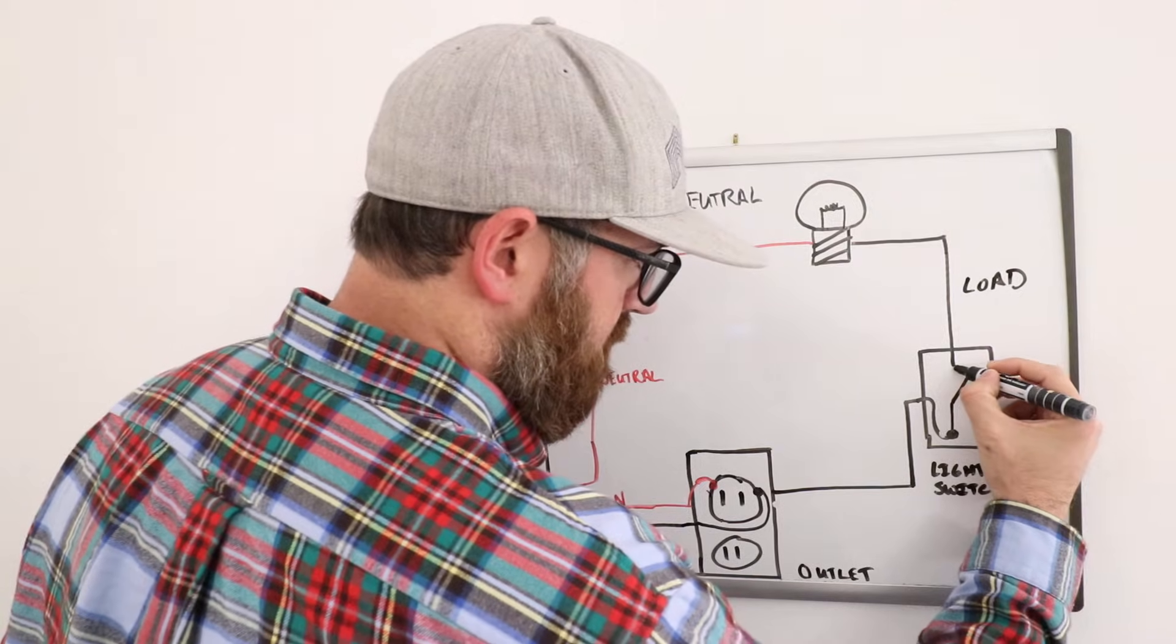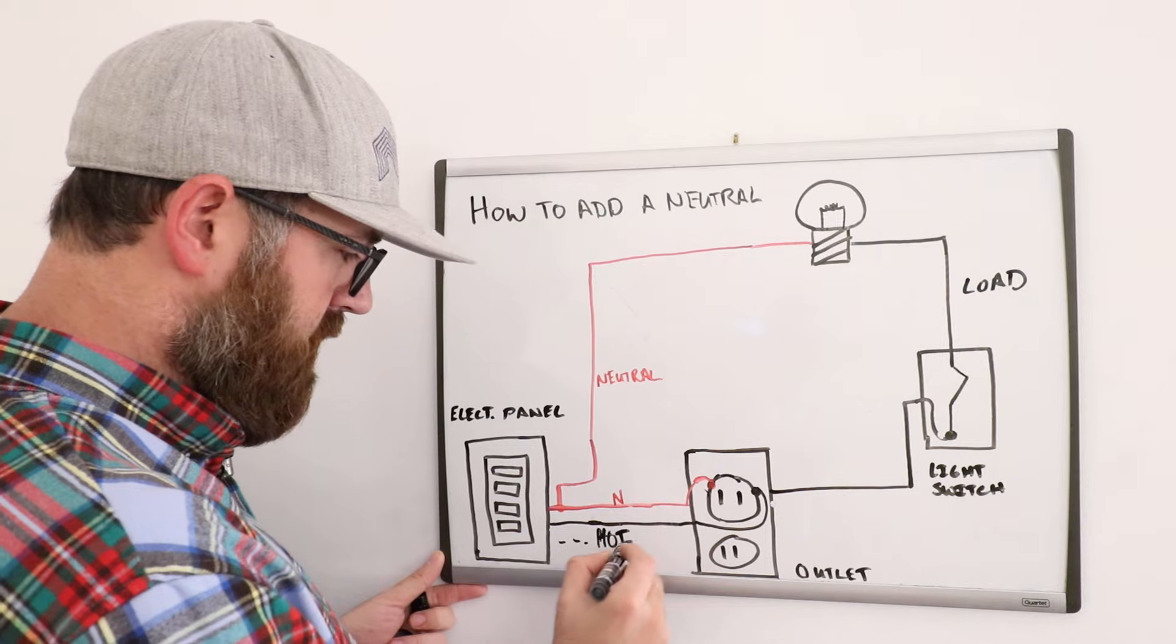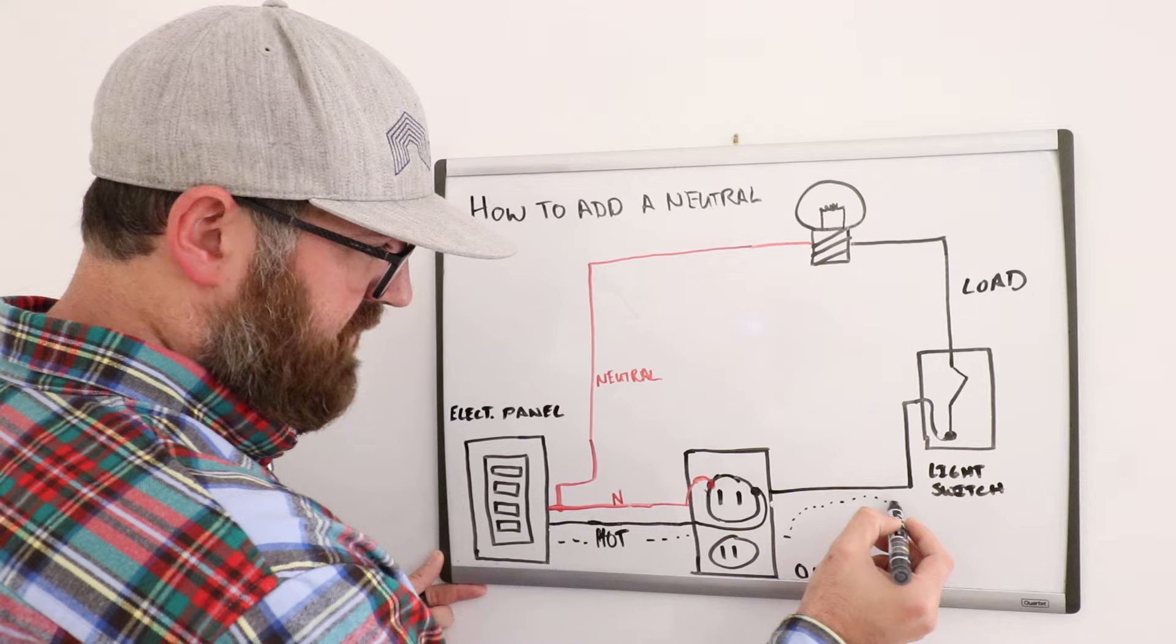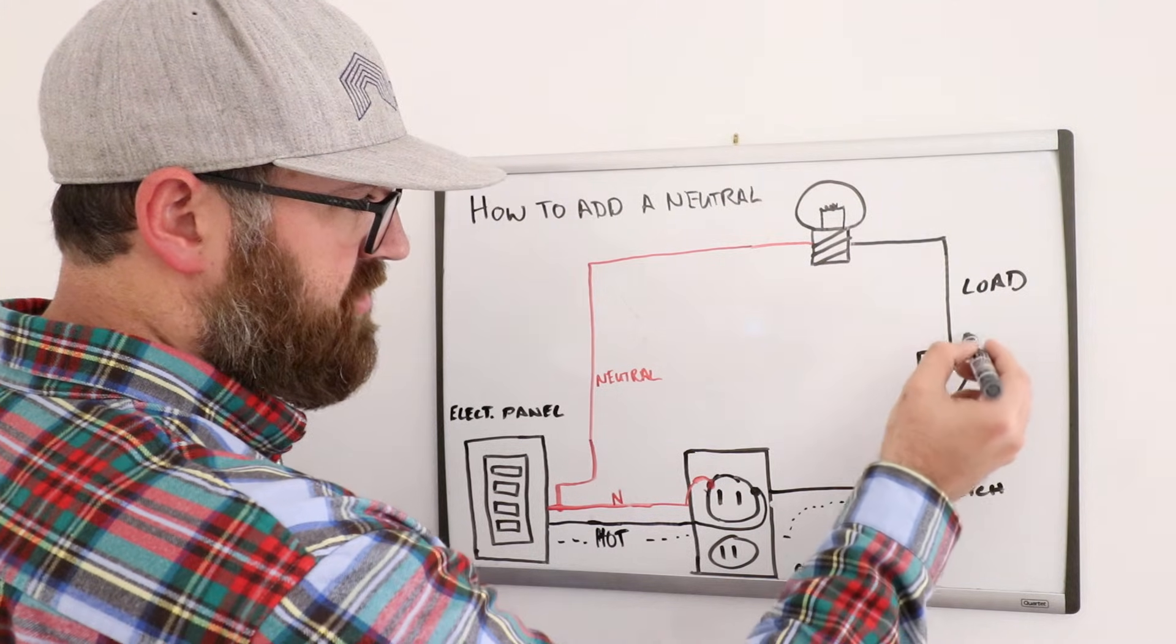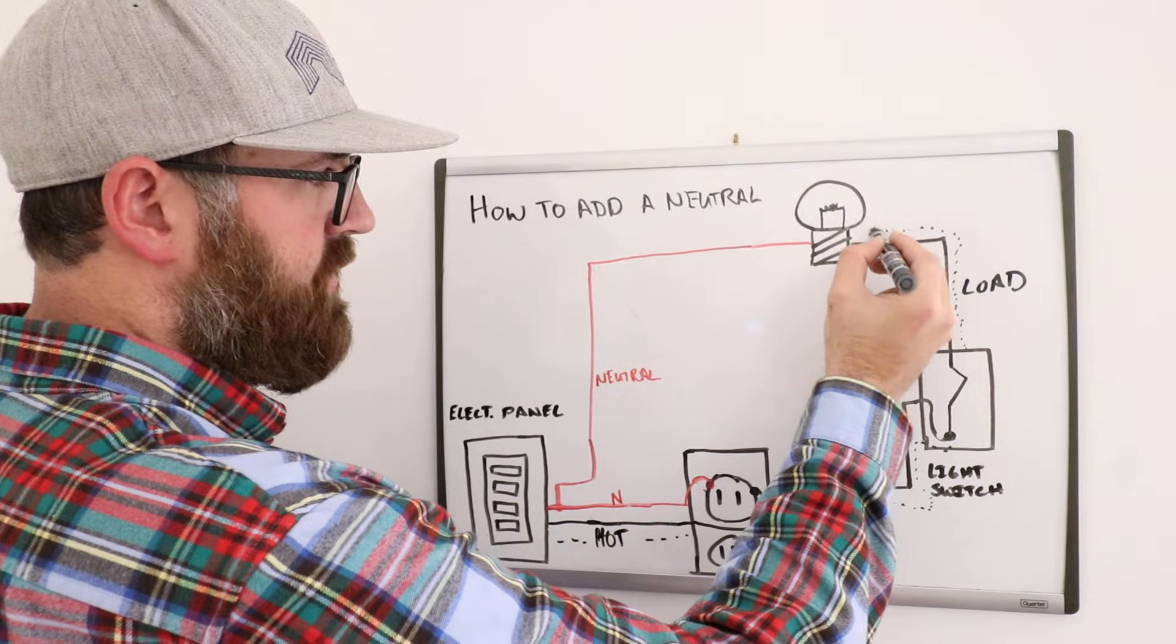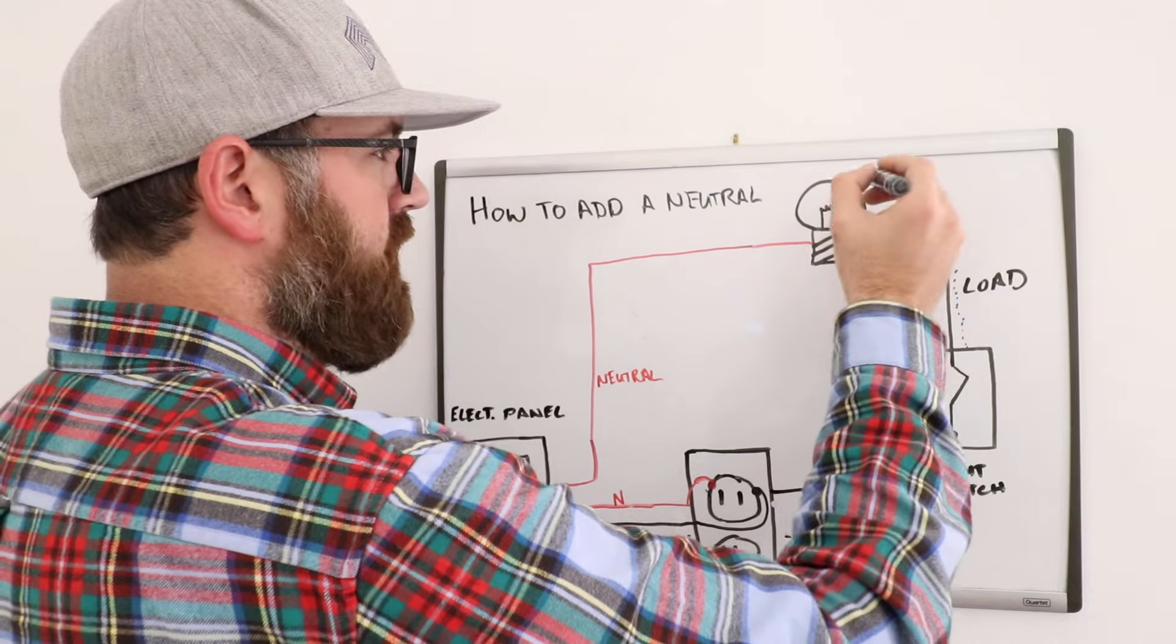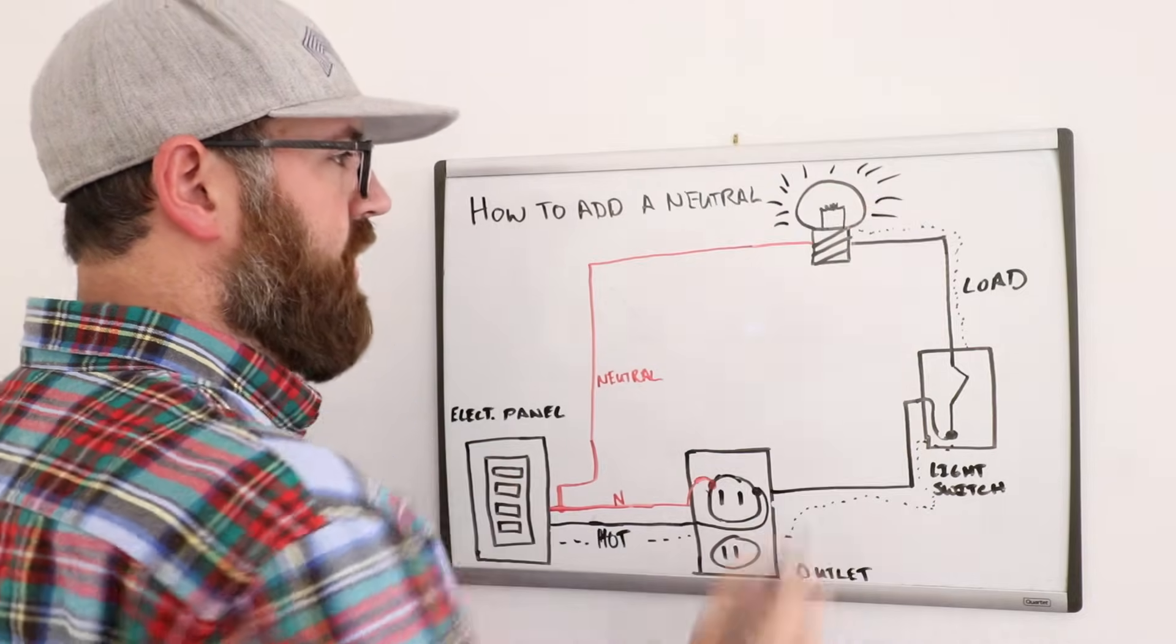As soon as this light switch closes, now you have power flowing from the hot through this outlet, or it doesn't have to be there if it's not, going through this hot wire, going into the light switch. Which the power then flows through the load and it goes to the light bulb here. And it's going to light up the light bulb.